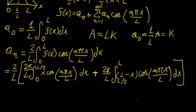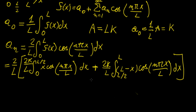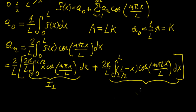We can factor out 2k/L, but first we need to evaluate each integral separately using integration by parts. Let's call these Integral 1 and Integral 2.